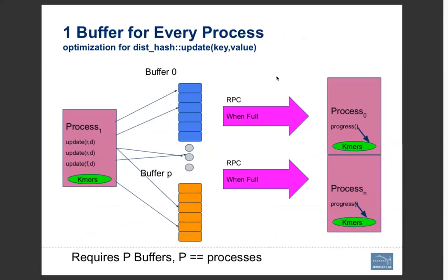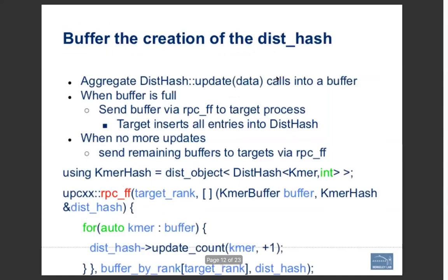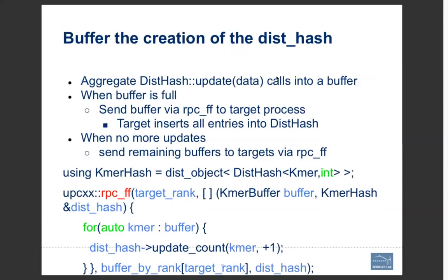So we developed a way to aggregate these messages: every time you insert into the table, instead of sending the RPC immediately, it inserts into a local buffer. When that buffer is full, it sends the RPC call to the remote process, which then iterates over all items in the buffer. The update call is invoked in the inner loop — trillions of times across the whole process — but then we only send maybe 100 million messages across the network. There are two stages: do the updates, then flush all remaining entries in the buffer at the end.